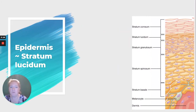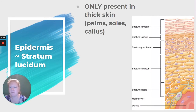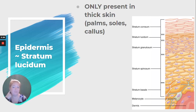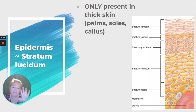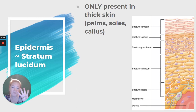Next we have the stratum lucidum. This layer is only present in thick skin, like the palms of our hands, the soles of our feet, and where you have a callus. In all the rest of our skin this layer is absent — so thin skin has only four layers because the stratum lucidum is absent.